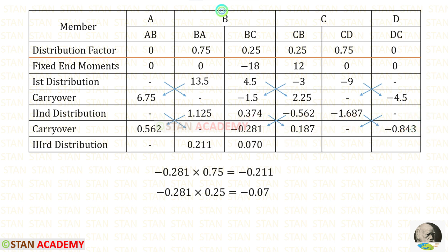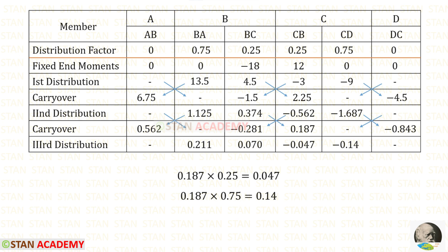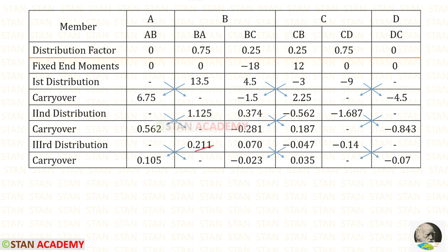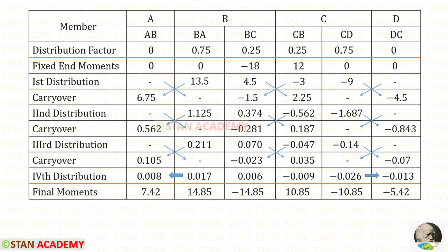Now let us do the third distribution in joint B: multiplying with the distribution factors gives negative values, so we enter them as positive. The third distribution in joint C gives positive values, so we enter them as negative. We do the carryover by dividing by 2. In the same way, we continue distributions and carryovers until we get very small values. I have done up to the fourth distribution. Now let us add all values to find the final moments.